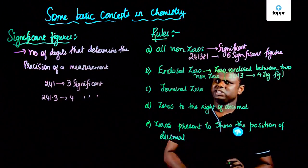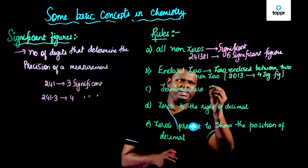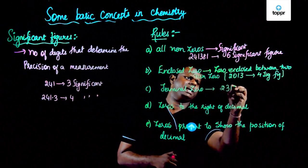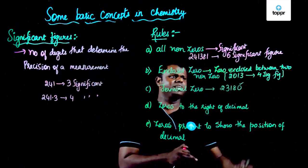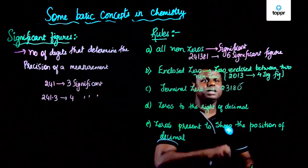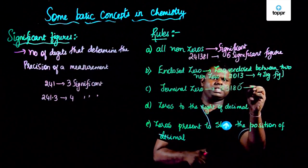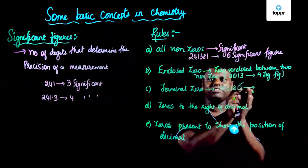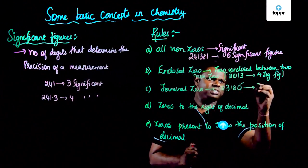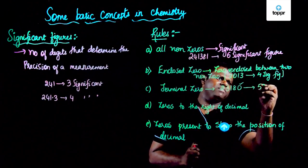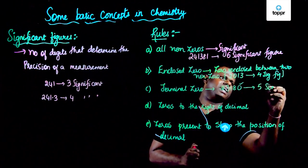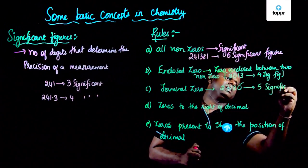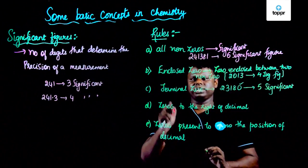Terminal zero is significant. So let's say if I have something like 2, 3, 1, 8, 0 — if you could see here, this is a terminal zero. That means when I talk about the value, this is a five-digit number. So this has five significant figures.